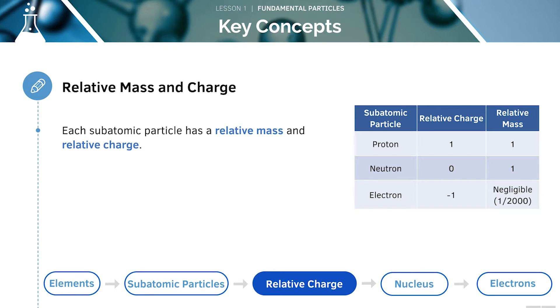As we've seen, each of the subatomic particles has a relative mass and a relative charge. The actual values of the particles are way too small for us to be able to use. It's much more useful for us to be able to use these relative values, as it allows us to compare the values of the particles to each other.